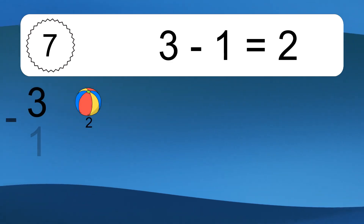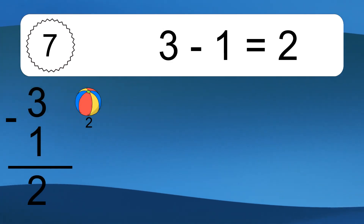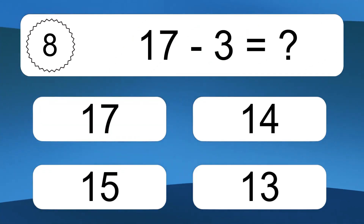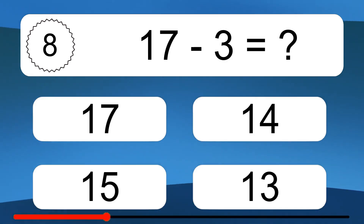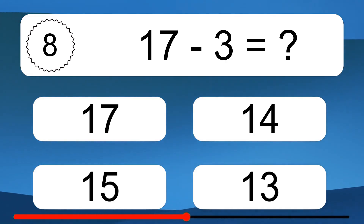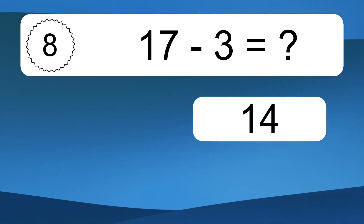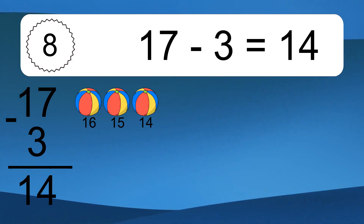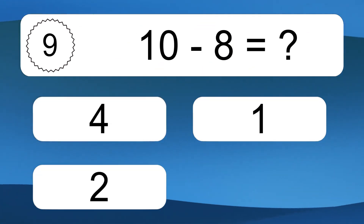3 minus 1 equals 2. Let's count it: 2. 17 minus 3 equals what? 17 minus 3 equals 14. Let's count it: 16, 15, 14.